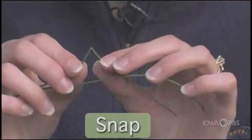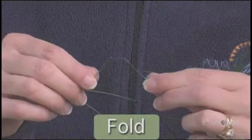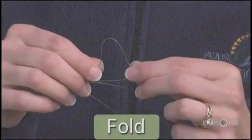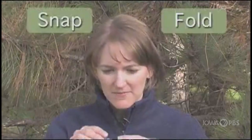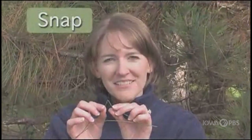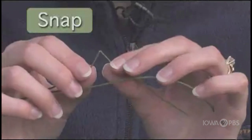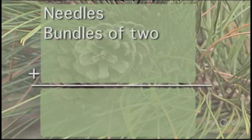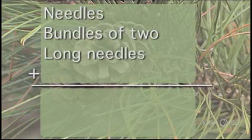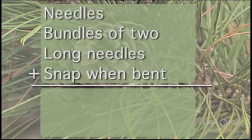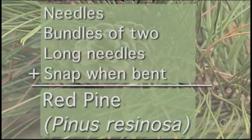The next question in the key refers to characteristics of the needle. Are they thin and brittle and snap when bent? Or are they thick and stiff and fold when bent? Let's look at these needles — they snap when bent. So that was our last question. According to our findings, this tree has leaves in the shape of needles, they occur in bundles of two, they're long needles, and the needles snap when bent. According to the key, this is a red pine, and the scientific name is Pinus resinosa.